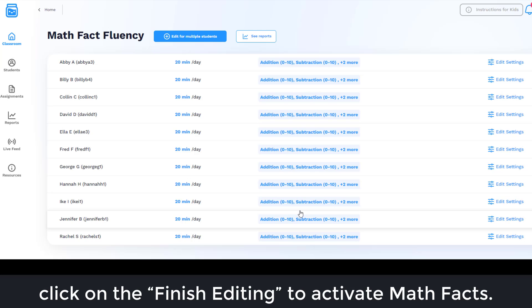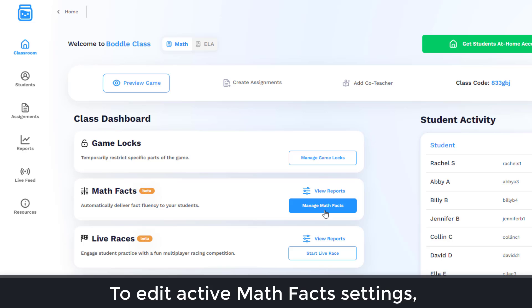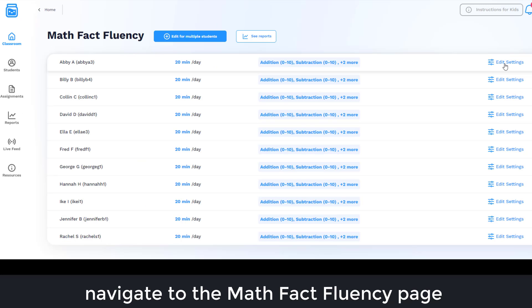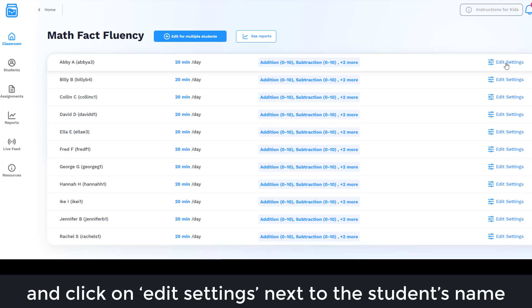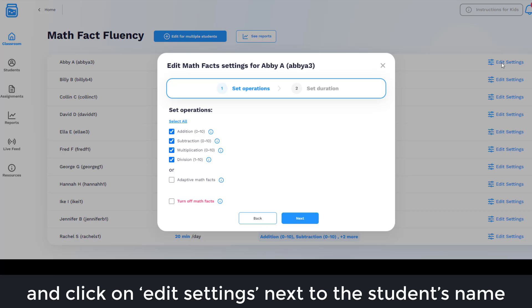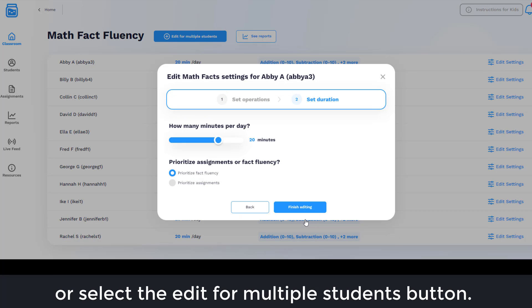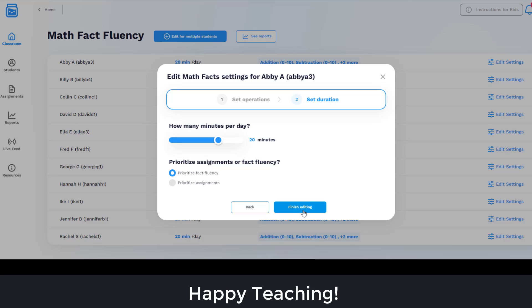To edit active Math Facts settings, navigate to the Math Fact Fluency page and click on Edit Settings next to the student's name, or select the Edit for Multiple Students button. Happy teaching!